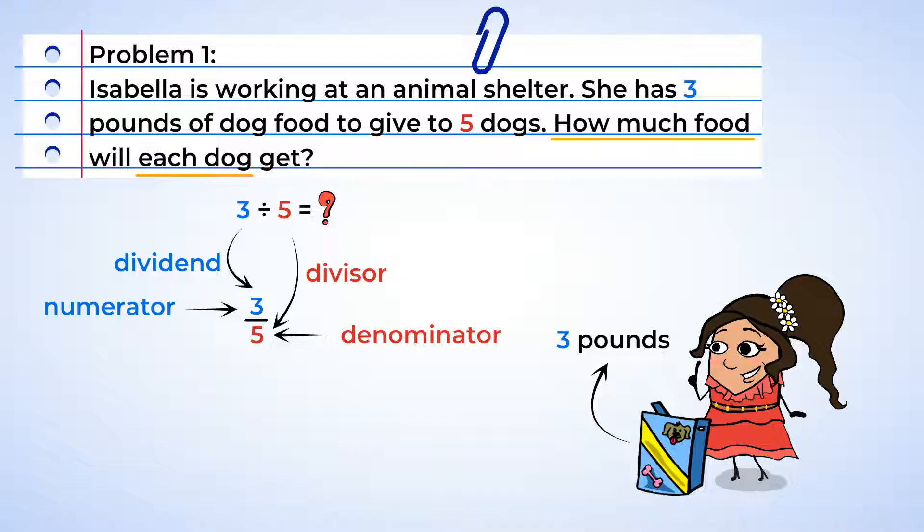It's like a fraction is a division problem in disguise. All right, there we go. Three over five or three-fifths. By writing it as a fraction, we've actually already solved the problem. But let's take a deeper look.